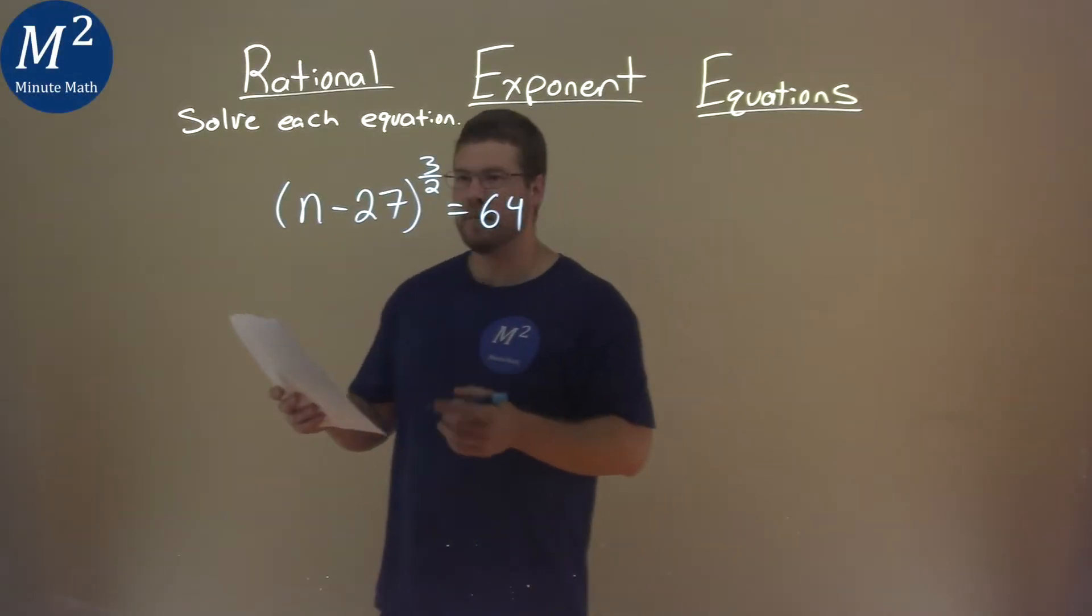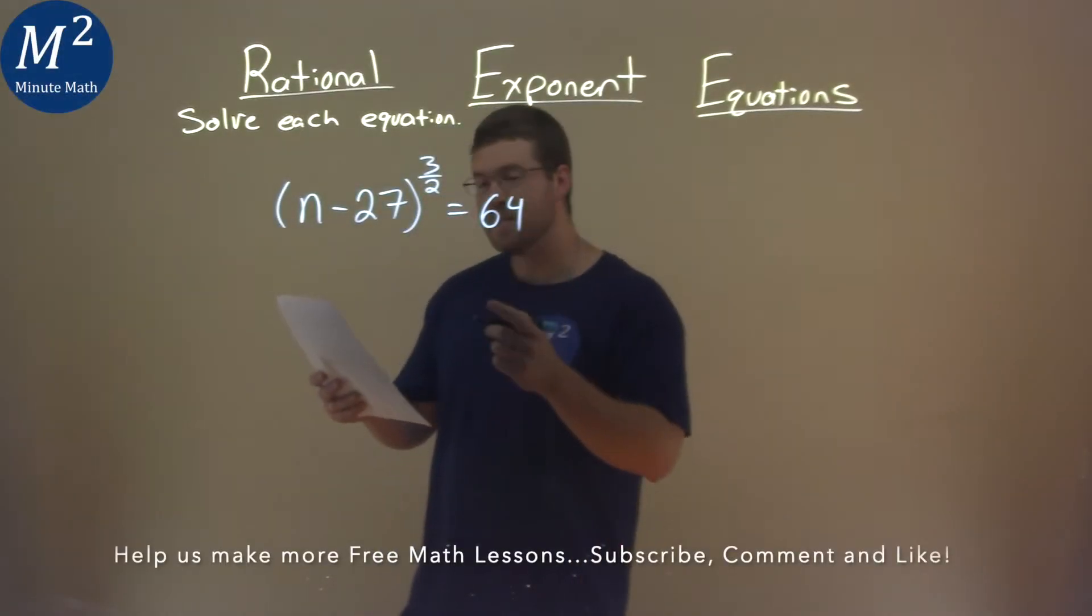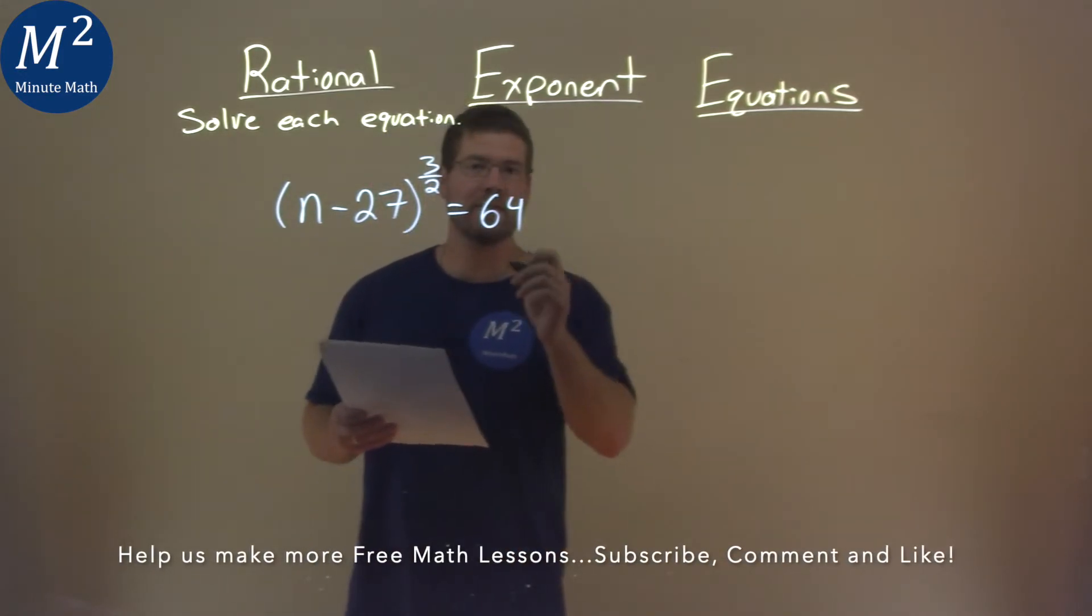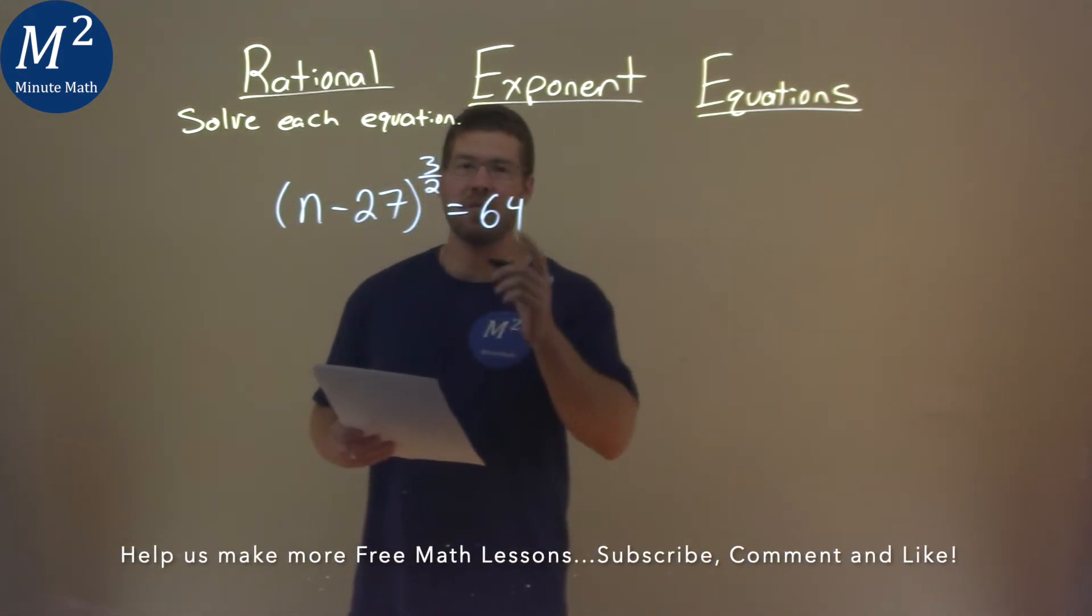We're given this problem right here: n minus 27, all to the 3 halves power, equals 64, and we have to solve this equation.